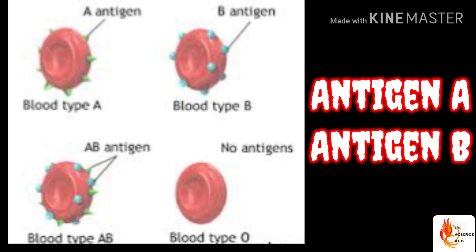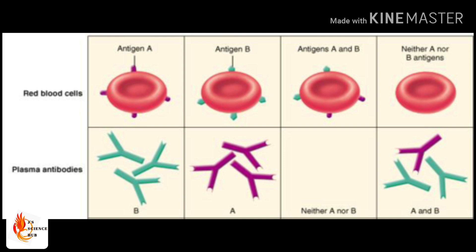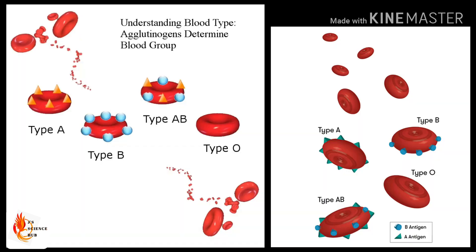Among them there are two antigens present — we call them antigen A and antigen B. It's easy to remember: if antigen A only is present, we consider that blood has blood group A. If antigen B only is present, we consider it as blood group B. If both antigens are present, we consider it as blood group AB. If neither A nor B is present, we consider it as blood group O.